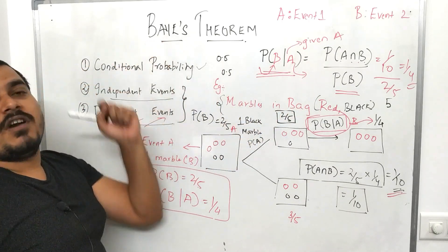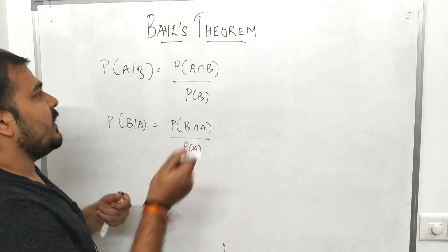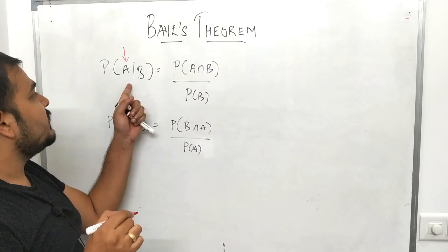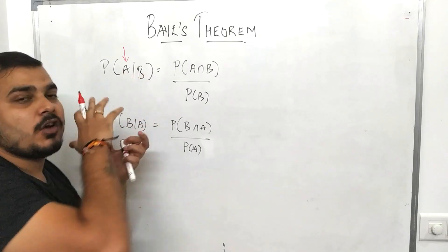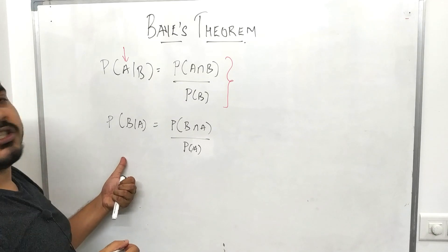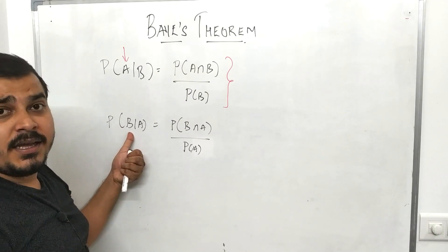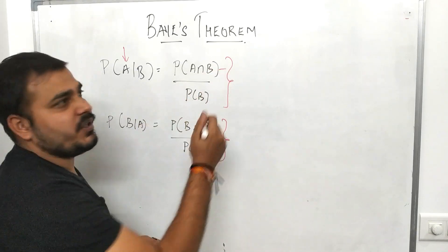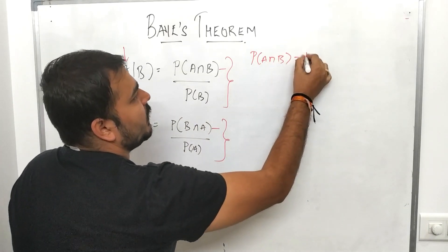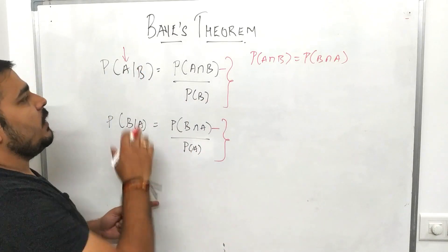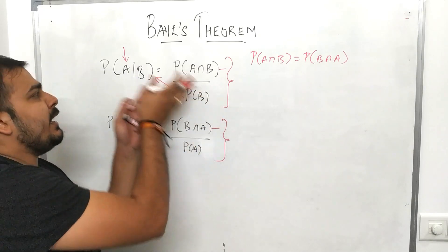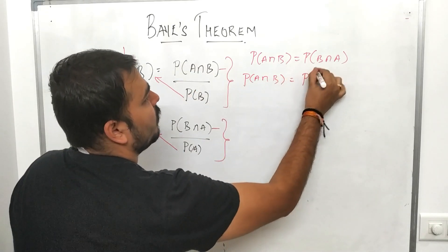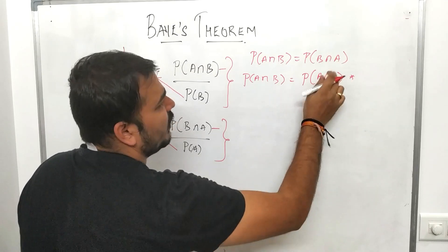Now let's use conditional probability to derive Bayes theorem. Suppose I want to find P(A|B) — the probability of event A given B has already happened. We write: P(A|B) equals P(A intersection B) divided by P(B). Similarly for the other direction: P(B|A) equals P(B intersection A) divided by P(A). Since P(A intersection B) equals P(B intersection A), these two expressions share the same numerator.